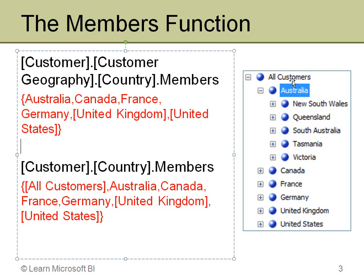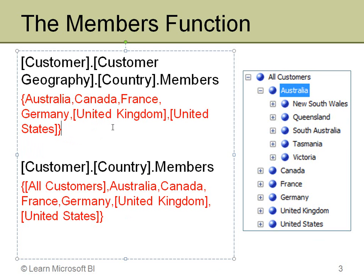If you look at the hierarchy diagram, at the country level you can see Australia, Canada, France, Germany, United Kingdom, and United States. That is the set returned when I execute that particular function.